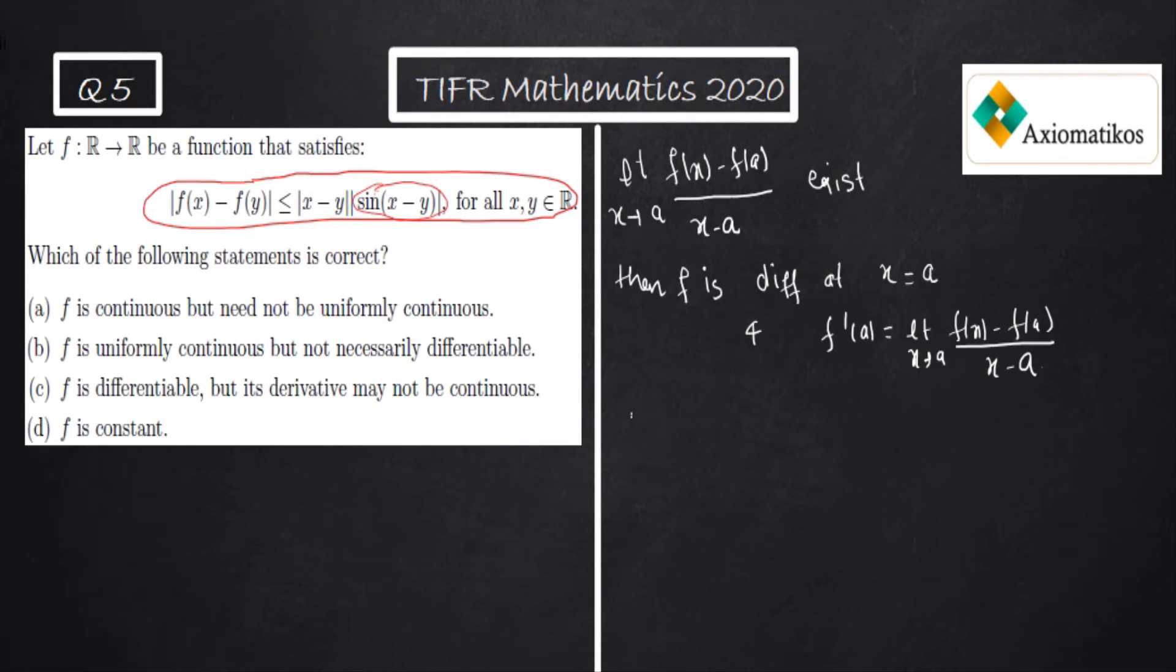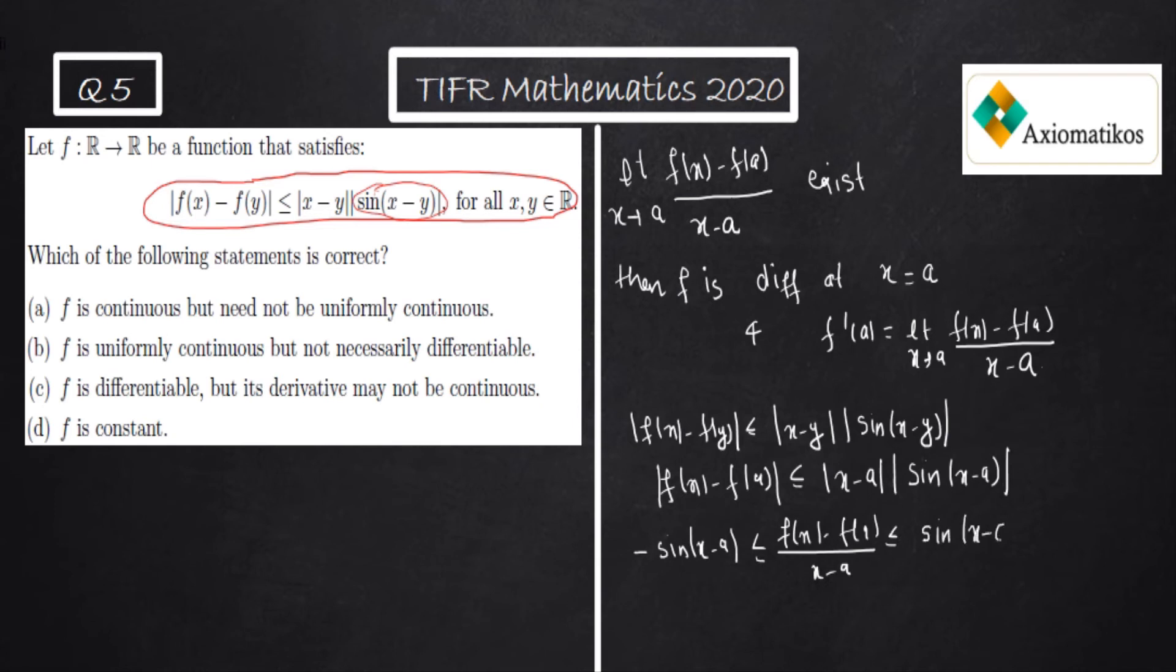So we are given that |f(x) - f(y)| ≤ |x - y||sin(x - y)|, this is true for all x, y belongs to R. So |f(x) - f(a)| / |x - a| will lie between -sin(x - a) and sin(x - a).